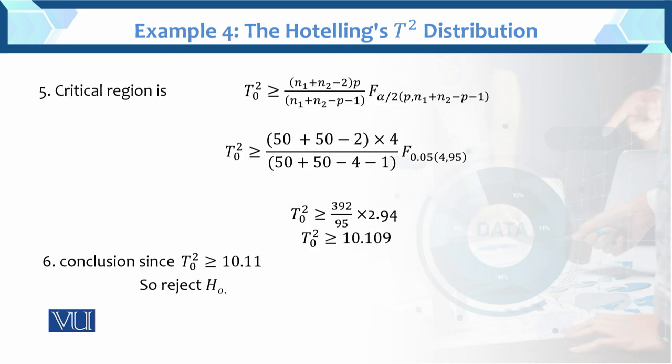Now the next step is the critical region. Here is alpha by 2, this is the table value, and p and p comma n1 plus n2 minus p minus 1, this is the degree of freedom. So p is how many dimensions? We have 4 dimensions. So n1 equals 50, n2 equals 50. We entered these values. So finally we have alpha, which is equal to 0.10. Now alpha by 2 which equals 0.05.